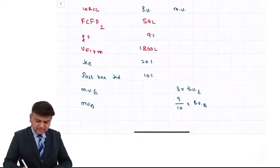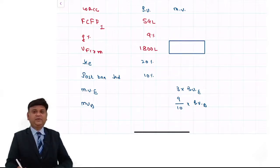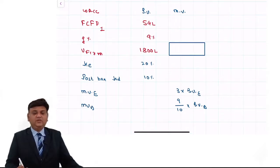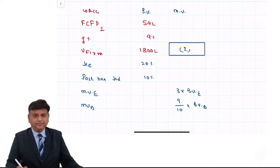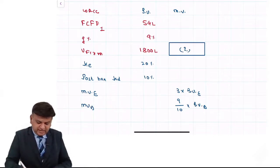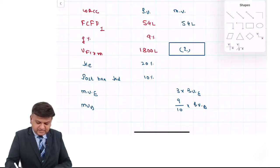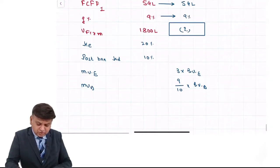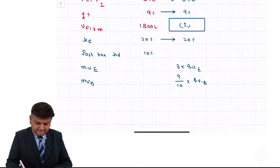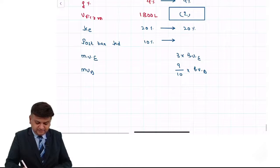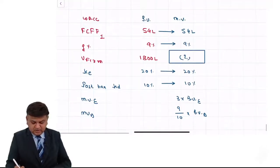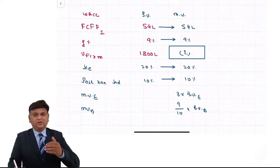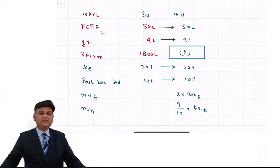Basically, the question asks us to find the value of the firm using market value weighted average cost of capital instead of book value WACC. The free cash flow, growth rate, cost of equity, and post-tax cost of debt will all remain the same — none of those change. We need to answer: what is the firm value when WACC is based on market value weights?